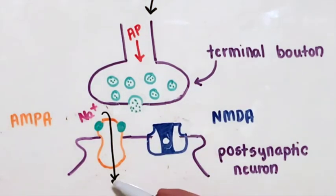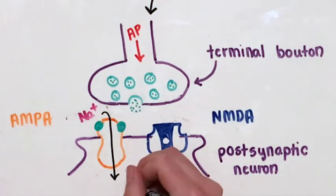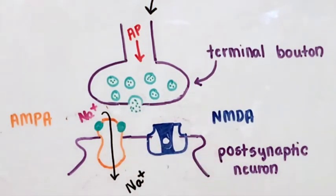As sodium floods in, the buildup of positive charge repels the positively charged magnesium quark that blocks the NMDA receptor's core.